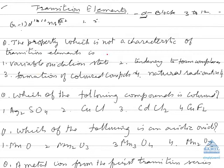Now let's study the characteristics one by one. The property which is not a characteristic of transition elements: they all show variable oxidation state because n minus 1 d and ns orbitals have nearly the same energy. So in addition to ns electrons, n minus 1 d electrons are also lost. Tendency to form complexes.